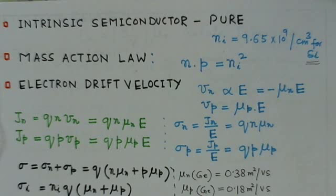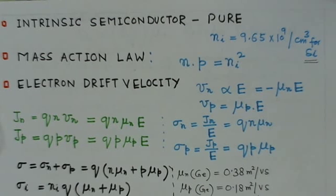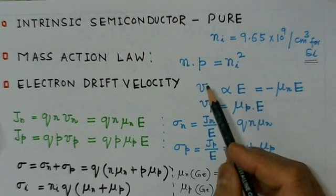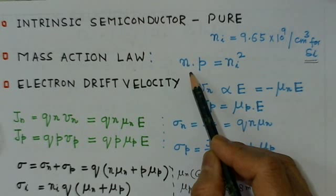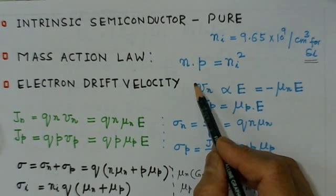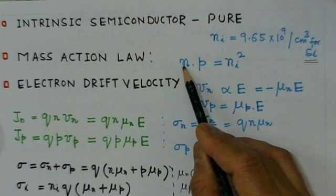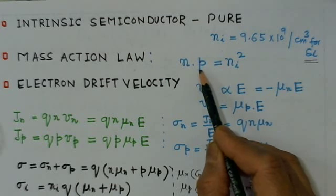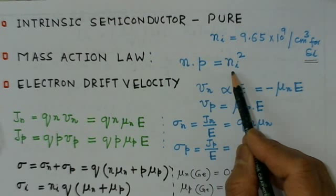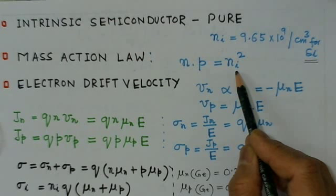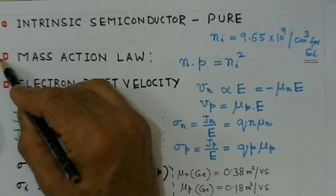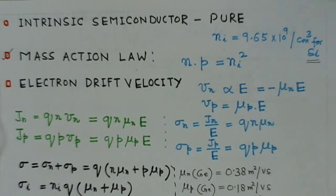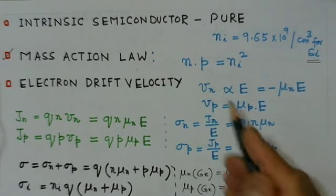One very important law is the mass action law. It states that in semiconductors in thermal equilibrium, the product of electron and hole concentration is always equal to the square of the intrinsic carrier concentration: np = ni². This is a very important relation, frequently used in solving GATE problems.